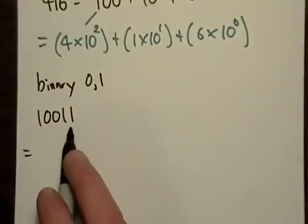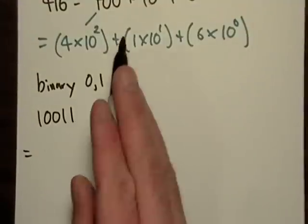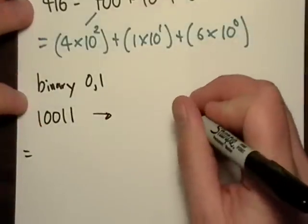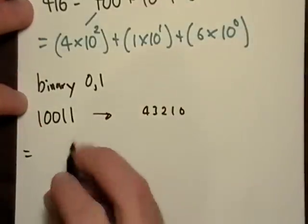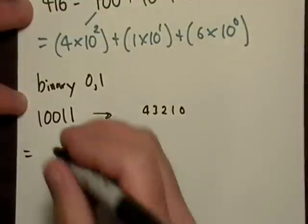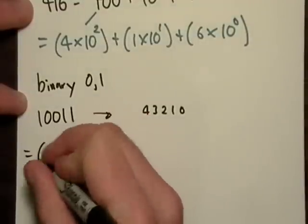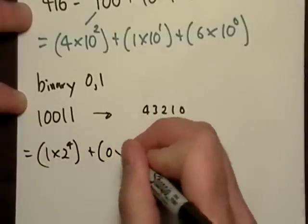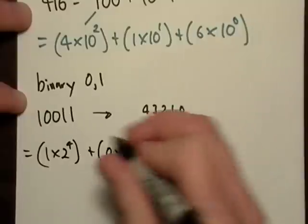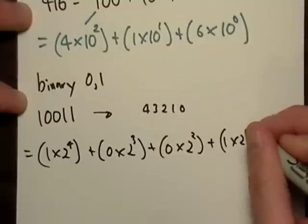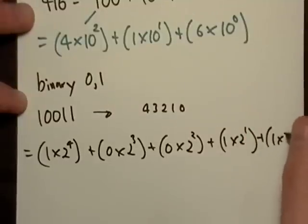What I like to do with binary numbers — since it's best to go from right to left, but you still write it out from left to right — I go over to the side and count: zero, one, two, three, four. So there are five digits here, or bits. My first power is going to be four, so it'll be 1 times 2 to the 4. Then we have 0 times 2 to the third, plus 0 times 2 to the second, plus 1 times 2 to the first, plus 1 times 2 to the zero.